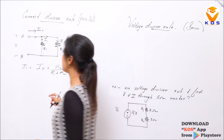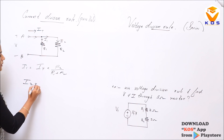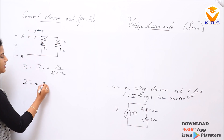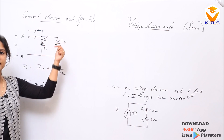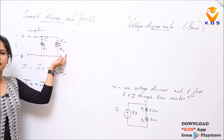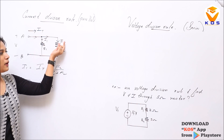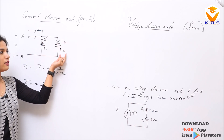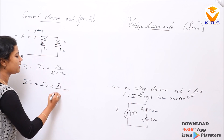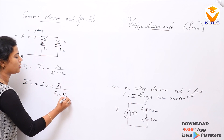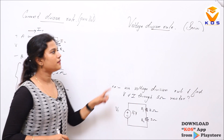Similarly, I2 will pass through R2, so I2 equals total current I multiplied by R1 divided by (R1 plus R2) — take the resistor through which I2 is not passing, which is R1, divided by the sum of all resistors. These are the values for I1 and I2 using the current division rule.